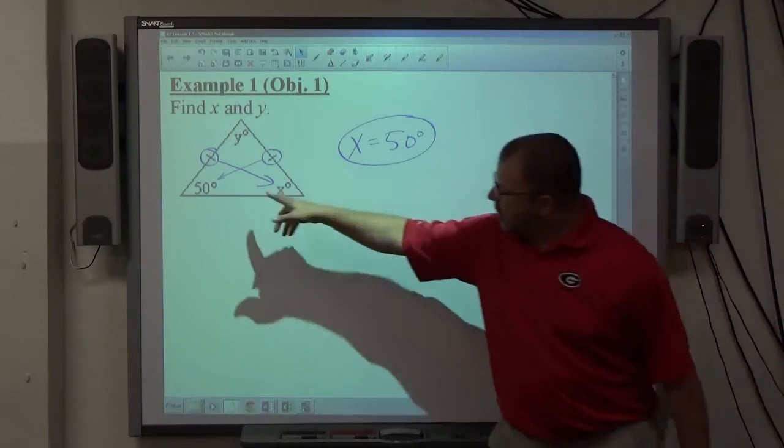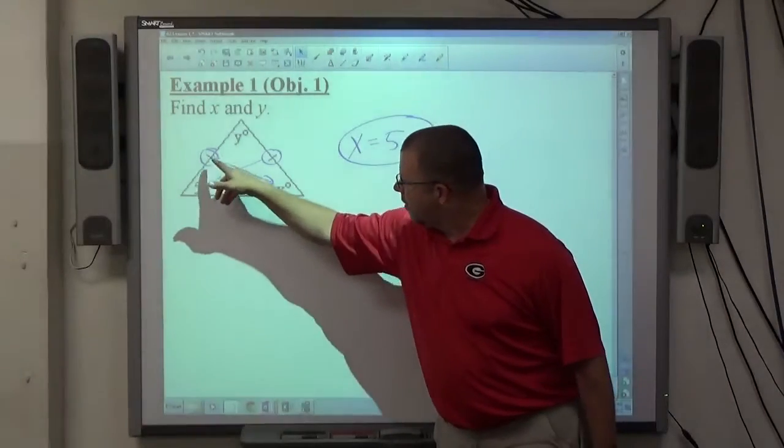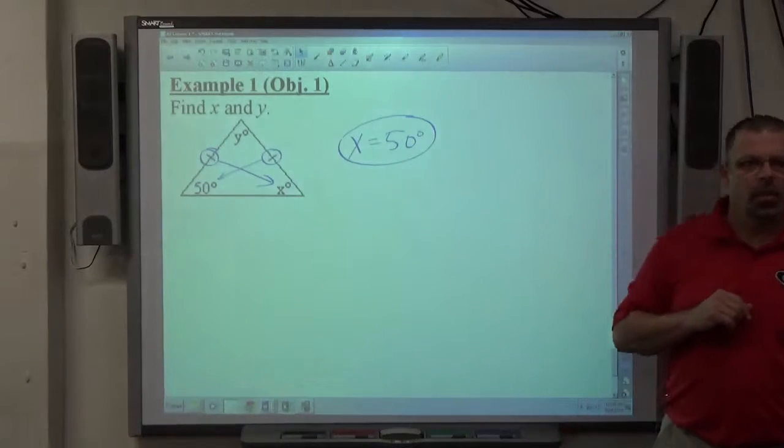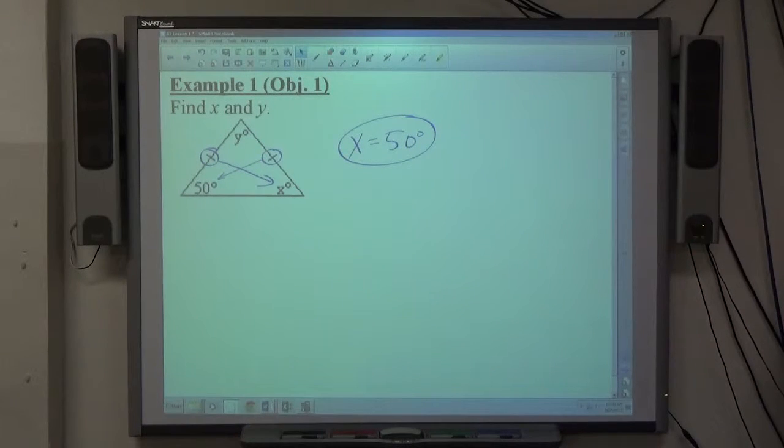The property states that angles that are opposite sides that are equal are equal. So these sides are equal, these angles have to be equal. Therefore, X has to be 50. Okay, now we know X is 50. What other property can I use to find out what Y is? Let's go with Emily. What do you think?